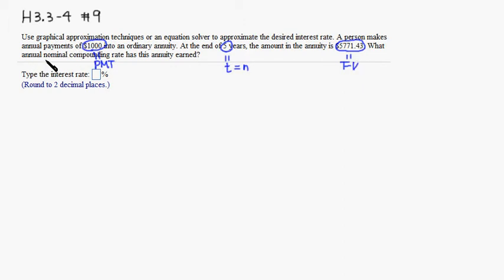This is the future value. We're looking for R, which is the same thing as i in this case because the payment is annually and the interest is compounded annually. Let's plug those numbers in. So future value, 5771.43 equals payment, 1000, times quantity (1 + i) raised to the fifth power because n equals 5, minus 1, over i.